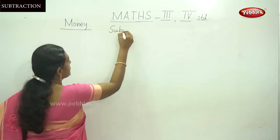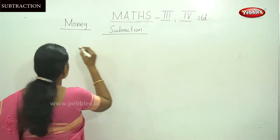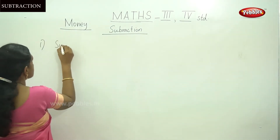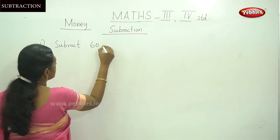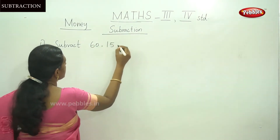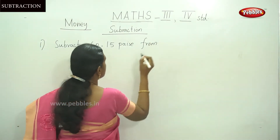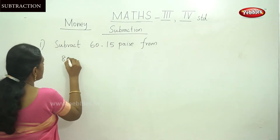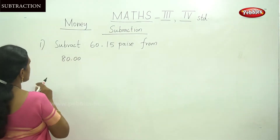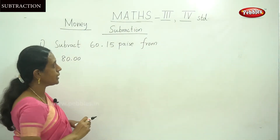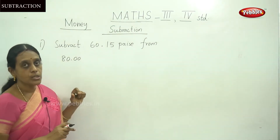Subtraction. Okay, the question is: subtract 60 Rupees 50 Paise from 80 Rupees. This is the first question — subtract 60 and 15 Paise from 80 Rupees.